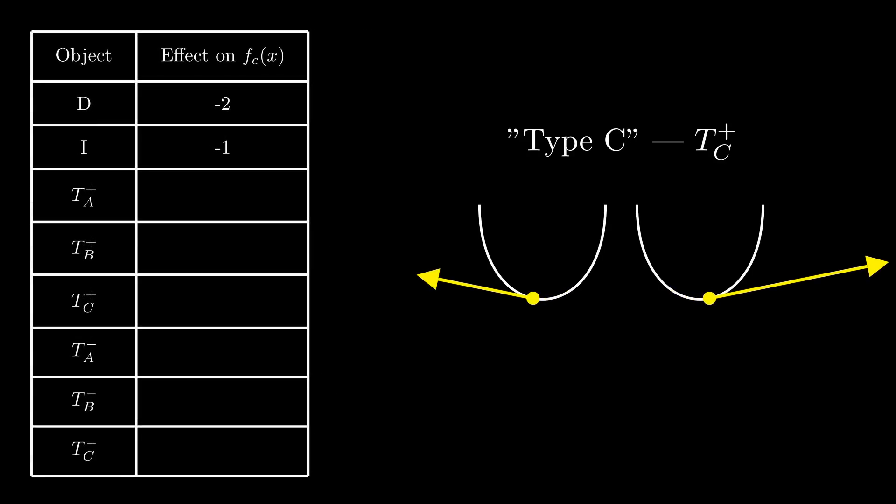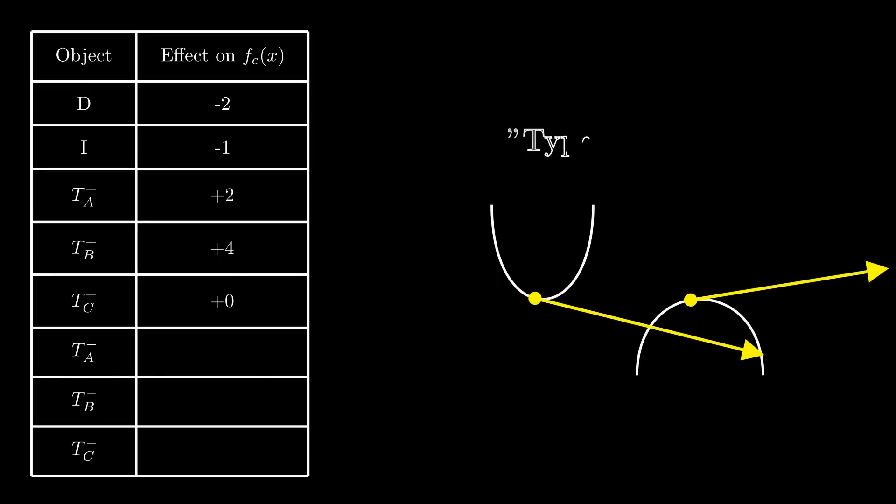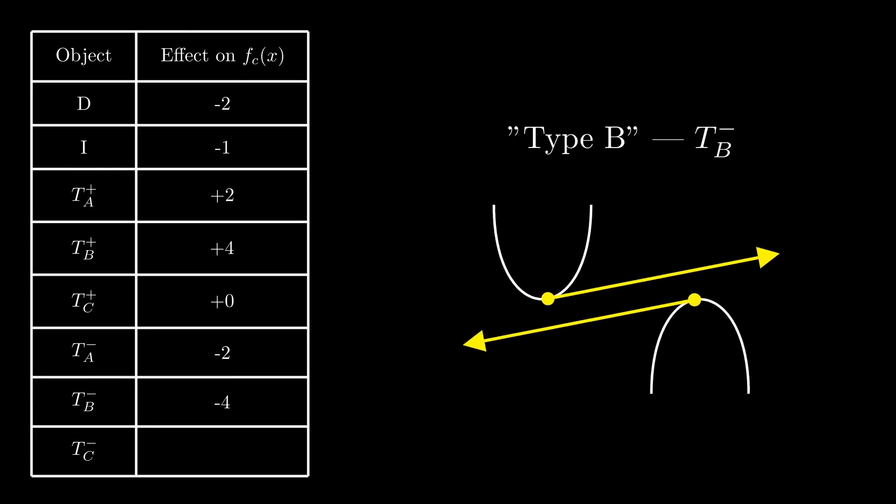Now we're going to need to expand our table a bit to make room for the new types, and we're going to play the same game with negative bitangents too. Notice this time that a type A negative bitangent has the effect of decreasing the crossing number by two, so instead its score is minus two. Type B negative bitangents get a crossing score of minus four. And type C negative bitangents get a crossing score of zero.